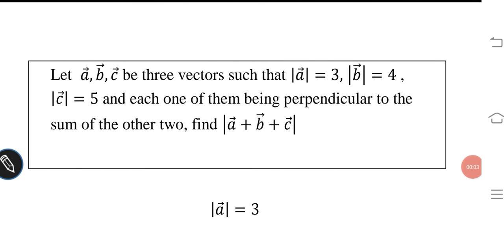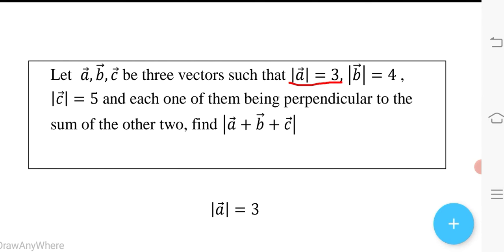Let vector a, vector b, vector c be three vectors such that |a| = 3, |b| = 4, and |c| = 5, and each one of them being perpendicular to the sum of the other two. Find the modulus of vector a plus vector b plus vector c.